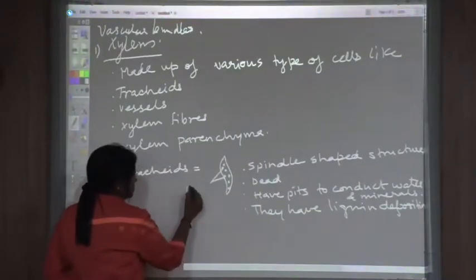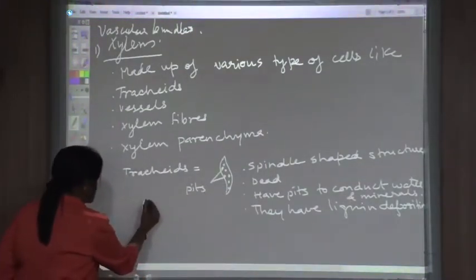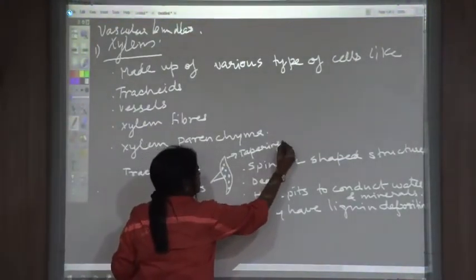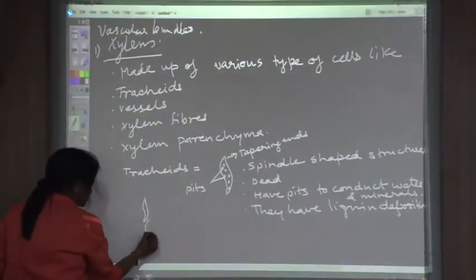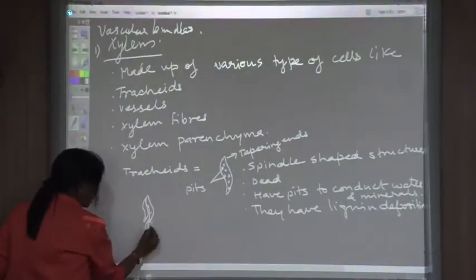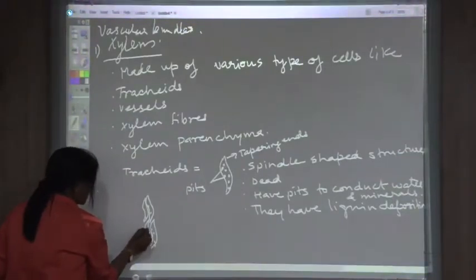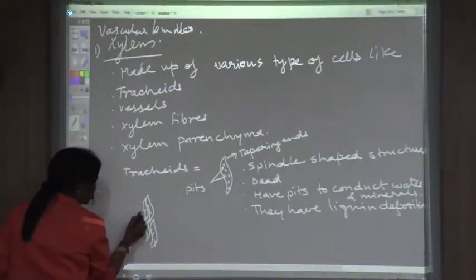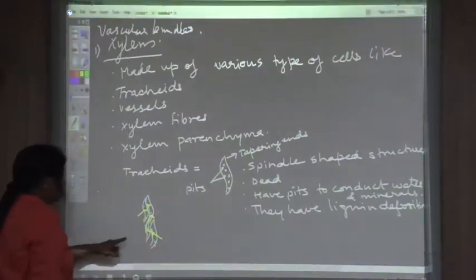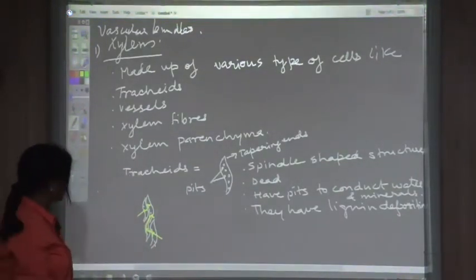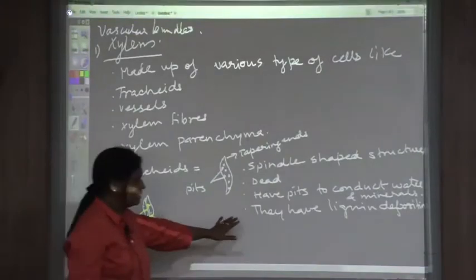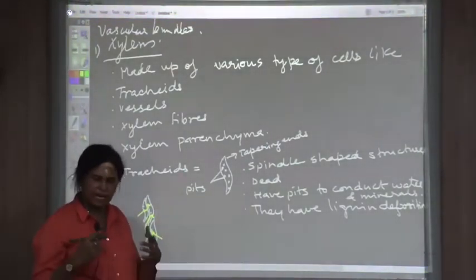Tracheids are spindle-shaped, meaning they are tapered or pointed at the ends and thicker in the middle portion. They have pits in the side wall and through these pits water will be moving up — similar to how water moves in a cotton wick in a Diwali diya. That is how water moves upward through the tracheids.